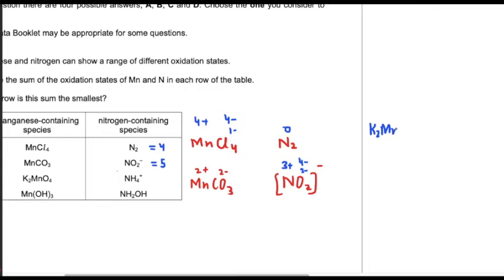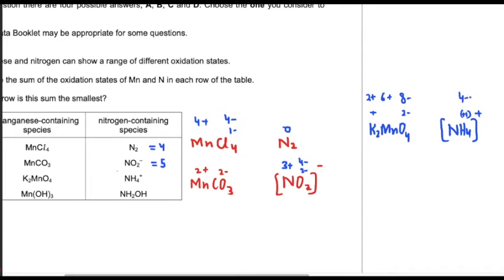In option C we have K2MnO4 and NH4 plus one. Oxygen has two-minus and there are four oxygens, giving eight-minus. Potassium has plus one and there are two potassium, giving two-plus. So manganese must be six-plus to cancel the minus-eight charge. In NH4 plus, hydrogen has plus one and there are four hydrogens giving four-plus. To get the answer plus one, nitrogen must be three-minus. So the sum of oxidation states is six-plus and three-minus, giving plus three.